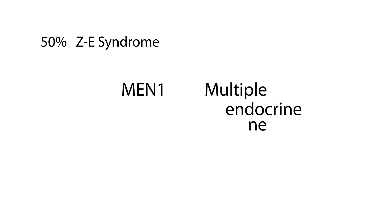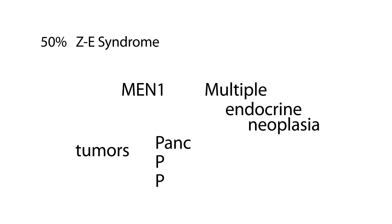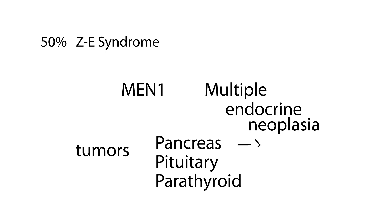One important thing to remember is that in about 50% of cases of ZE syndrome, you also have a syndrome known as MEN-1, or multiple endocrine neoplasia. MEN-1 involves a set of tumors that occur in what I like to remember as the three P's: tumors in the pancreas, pituitary, and parathyroid. The pancreas tumor is what causes the ZE, but you also have two additional tumors in MEN-1.